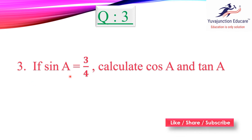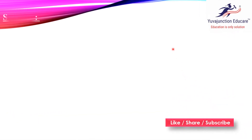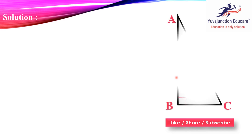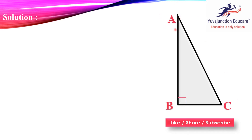In Question 3, it is given: if sin A is equal to 3 by 4, calculate cos A and tan A. One trigonometric ratio is given and you have to find cos A and tan A. First of all, we are going to draw a triangle ABC where angle B is 90°. We took triangle ABC because sin A is given, meaning we are talking about ratios with respect to angle A.